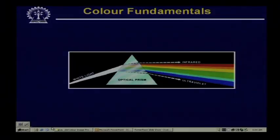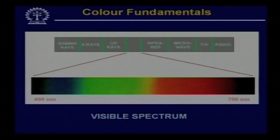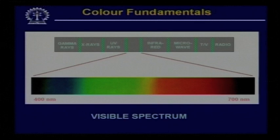If you consider the electromagnetic spectrum, the complete electromagnetic spectrum ranges from gamma rays to radio frequency waves. You find that the visible light spectrum occupies only a very narrow range of frequencies in this entire electromagnetic spectrum. The wavelength of the visible spectrum roughly varies from about 400 nanometres to 700 nanometres — at one end around 400 nm and at the other end around 700 nm.